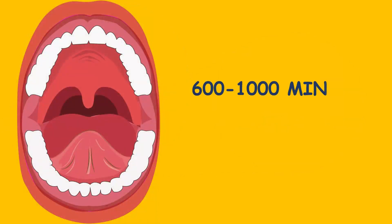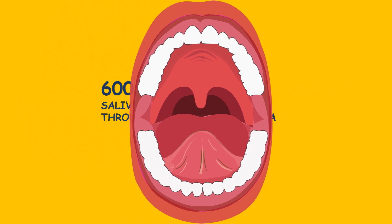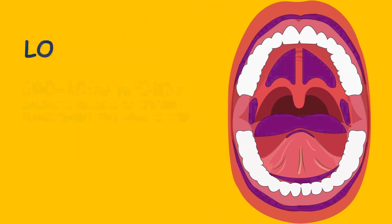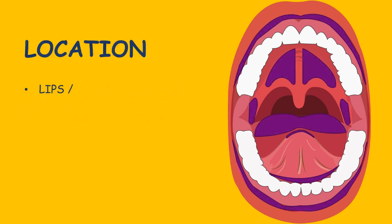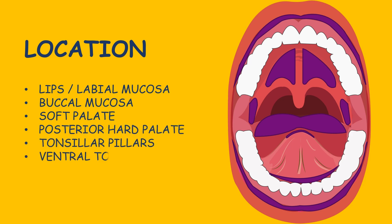There are 600 to 1000 minor salivary glands that are scattered throughout the oral mucosa. These glands are mostly concentrated in the region of the lips, buccal mucosa, soft palate, posterior hard palate, tonsillar pillars, the ventral tongue, and the floor of mouth.